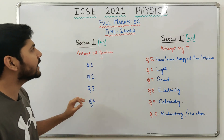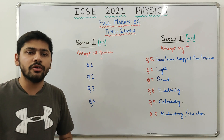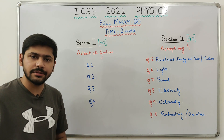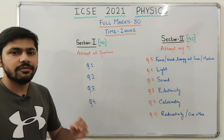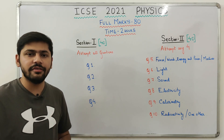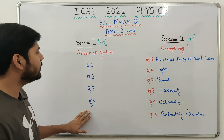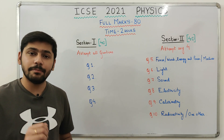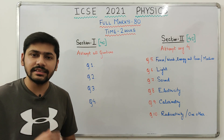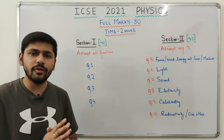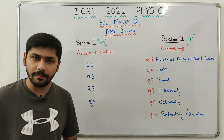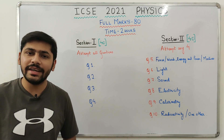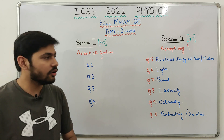That was all regarding the question paper pattern. Now, a few tips to maximize your score. In Section 1, you will face short questions and answers including definitions, SI units, CGS units, simple explanations, short numericals, small diagrams, and a few concept-based questions. Answers should be precise and to the point, so Section 1 should not be a worry.